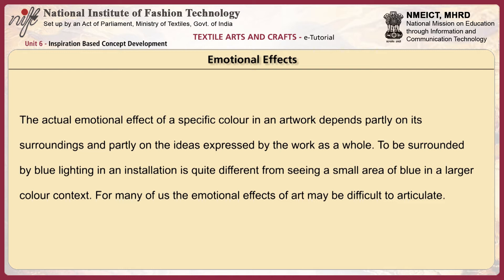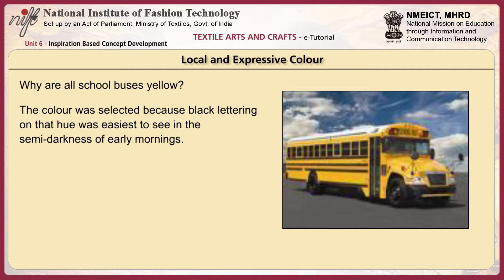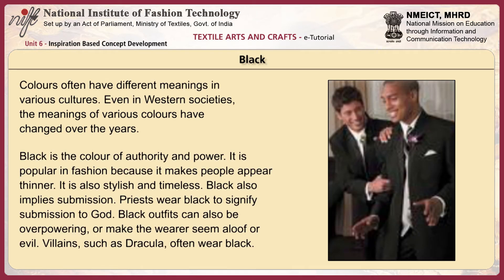The actual emotional effect of a specific color depends partly on its surroundings and partly on the ideas expressed by the work as a whole. To be surrounded by blue lighting in an installation is quite different from seeing a small area of blue in a larger color context. There are two opposite ways of using color in representational art: local color — the color something appears from nearby under average lighting — and expressionistic use of color, whereby artists use color to express an emotional rather than a visual truth. Colors often have different meanings in various cultures, and even in western societies the meanings of colors have changed over the years.